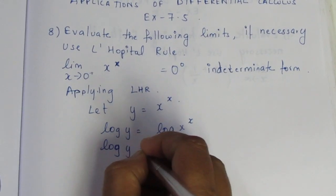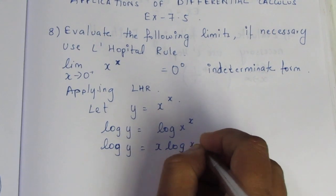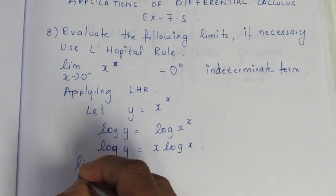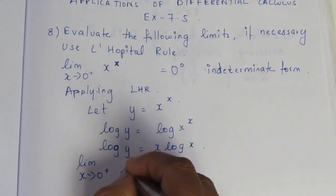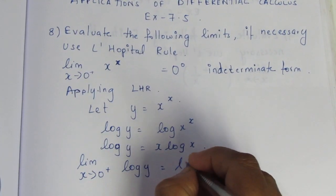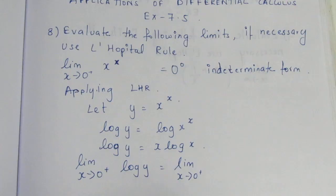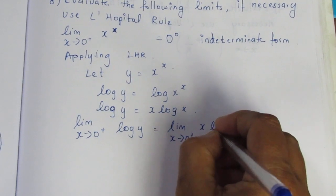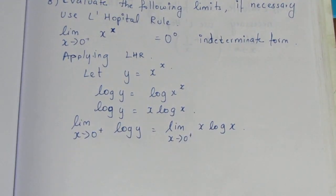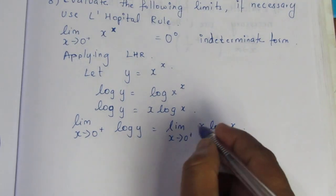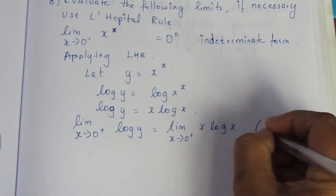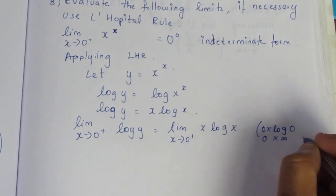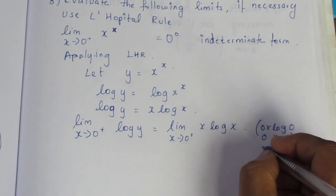We consider the right-hand limit: limit as x tends to 0 plus of log y, which equals limit of x log x. Now we substitute the limit value 0 into log 0. Since log 0 is negative infinity, this gives us an indeterminate value.